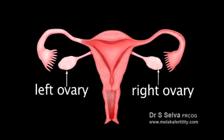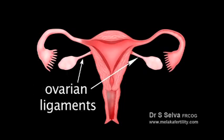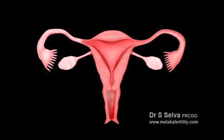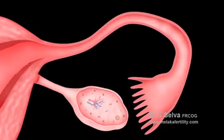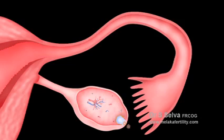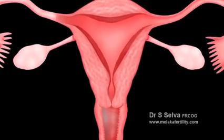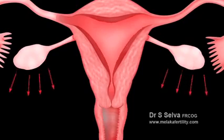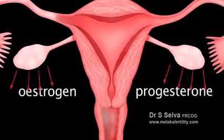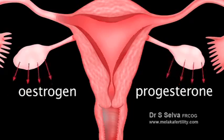The ovaries are small oval-shaped paired glands that are attached to each side of the uterus via a thin fibrous ovarian ligament. The pair is responsible for storing and nurturing immature egg cells to become mature eggs. Every month, one of the ovaries releases a mature egg into its neighboring fallopian tube. In addition to producing eggs, the ovaries produce two main female sex hormones — estrogen and progesterone — which are vital in regulating menstrual cycles.